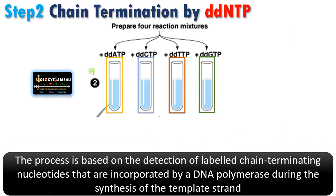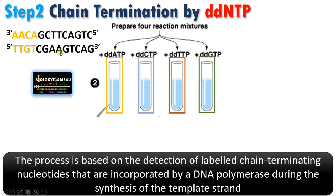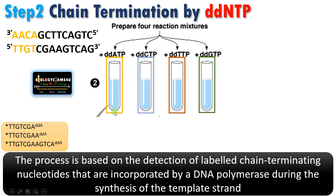Now let us make this more clear. There are four reaction mixtures, each with a different ddNTP or dideoxynucleotide. Let us take the first tube with ddATP — adenine nucleotide. Suppose this is the unknown sequence and this is the template sequence we are going to find out. In this tube, whenever there is an incorporation of a dideoxy adenine nucleotide, chain termination occurs. So we get fragments — here comes the first adenine forming the first fragment, then the second adenine forming the second fragment, and a third fragment as well.